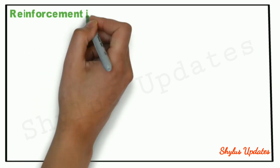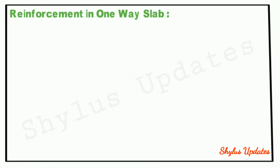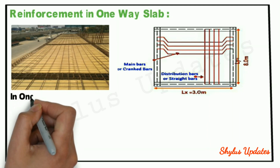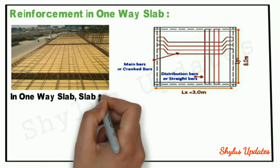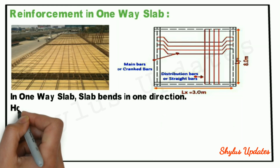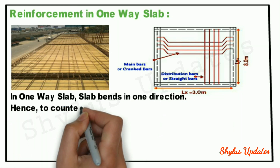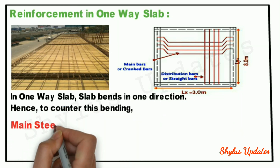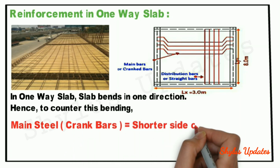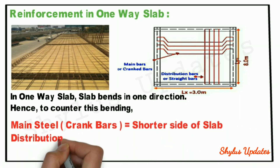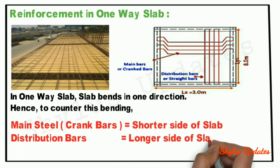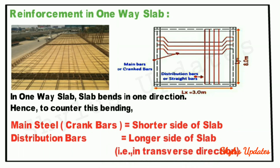Reinforcement in 1-way slab: In a 1-way slab, the slab bends in one direction. Hence, to counter this bending, main steel — i.e. crank bars — is provided on the shorter side of the slab, and distribution bars are provided on the longer side of the slab, i.e. in the transverse direction.